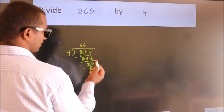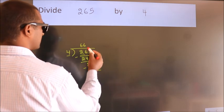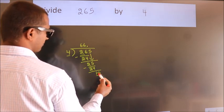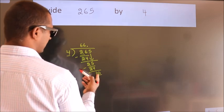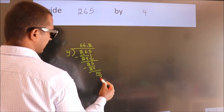After this, there are no more numbers to bring down. So what we do is put a dot and take 0, giving us 10. A number close to 10 in the 4 table is 4 times 2, which is 8.